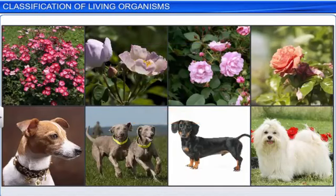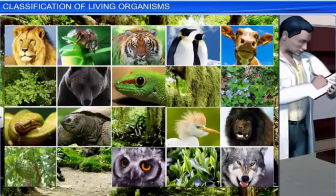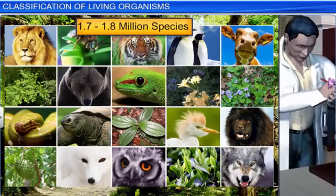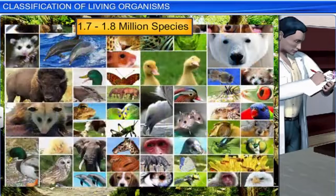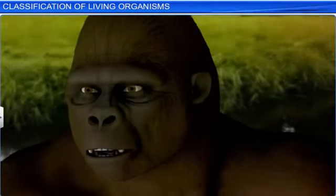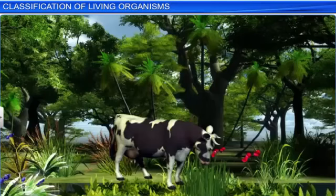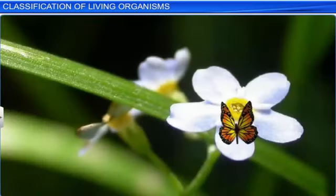In other words, species is a group of similar individuals sharing a common gene pool and interbreeding freely, producing fertile progeny. Today, there are about 1.7 to 1.8 million species known to us, and this number is ever increasing as we explore new areas along with the old ones. The number and types of living organisms on the earth is referred to as biodiversity.